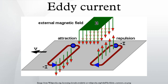By Lenz's law, an eddy current creates a magnetic field that opposes the magnetic field that created it, and thus eddy currents react back on the source of the magnetic field. For example, a nearby conductive surface will exert a drag force on a moving magnet that opposes its motion, due to eddy currents induced in the surface by the moving magnetic field.